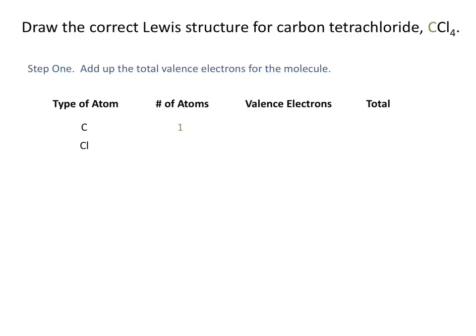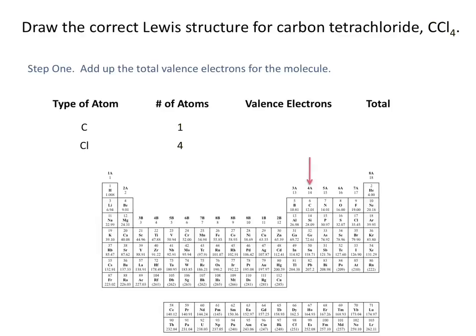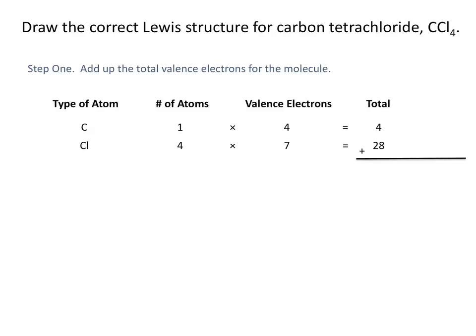We have one carbon atom in CCl4 and four chlorine atoms. Carbon is in the fourth group on the periodic table, so it has four valence electrons, contributing four total. Chlorine is in the seventh group and has seven valence electrons. With four chlorine atoms, they contribute a total of 28 valence electrons. Adding these up, we have 32 valence electrons total that we need to include in our structure.